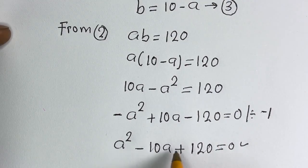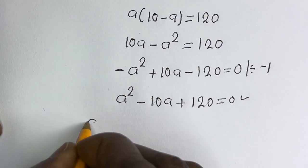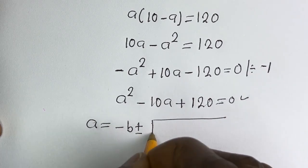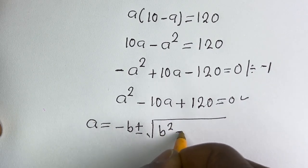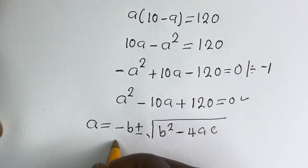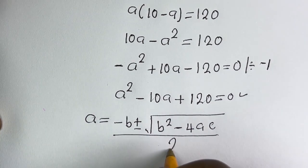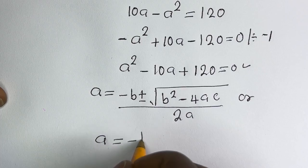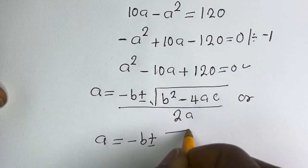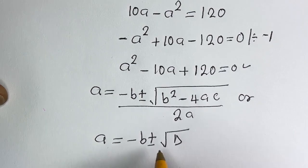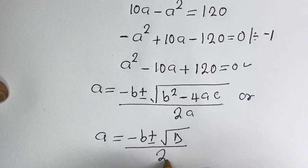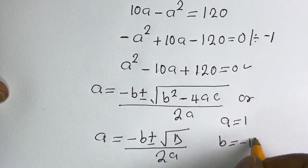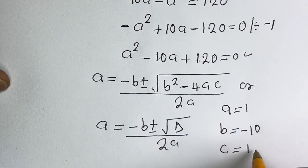This is a quadratic equation. Let's solve using the quadratic general formula: A is equal to minus B plus or minus square root of B squared minus 4AC, over 2A. From this equation, a is equal to 1, b is equal to minus 10, c is equal to 120.